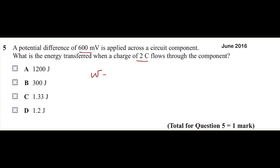There is one formula for calculating the energy: W = V × Q, where voltage is 600 millivolts. To change it into volts, which is 10 to the power of minus three.